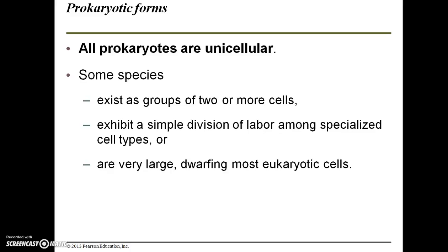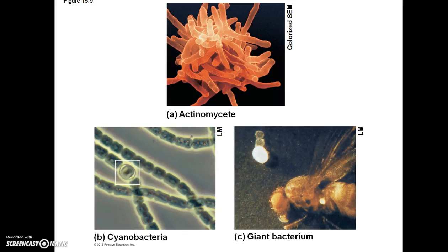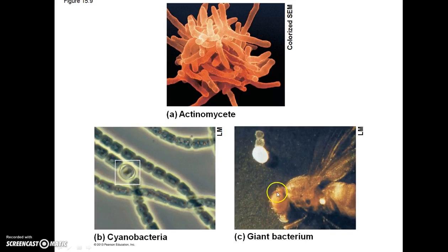All prokaryotes are unicellular, but some species exist as groups of two or more cells and exhibit a simple division of labor among specialized cell types. Some species are actually very large and dwarf most eukaryotic cells — these are the exceptions. Here we have a variety of different prokaryotic cells: an actinomycete, a cyanobacteria famous for living in extreme environments, and a giant bacterium about the same size as a fruit fly's eye.